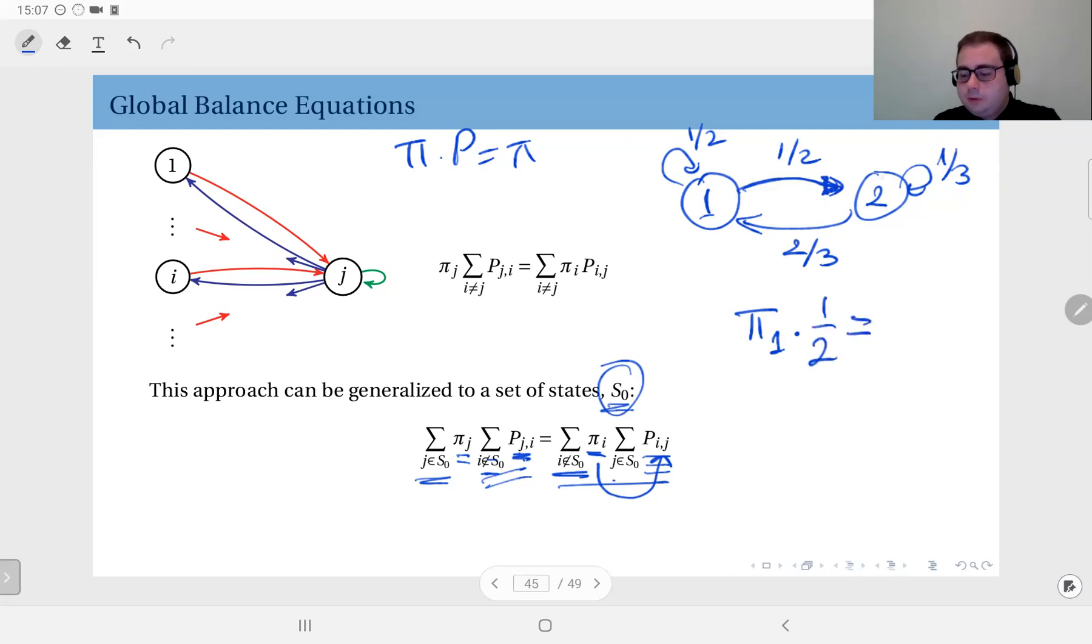Equals the ones coming into one: π₂ times 2/3. I can also write the same for state 2, but it will be the same equation anyway, so I'm not going to write it. Factoring in the fact that π₁ and π₂ should add up to one, I can just write here 1 minus π₁.